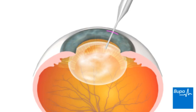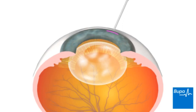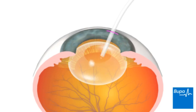An ultrasound tool is used to break up the lens. The lens sits in a thin sack of tissue called a lens capsule. The broken up pieces of lens are removed from the lens capsule through a small tube.